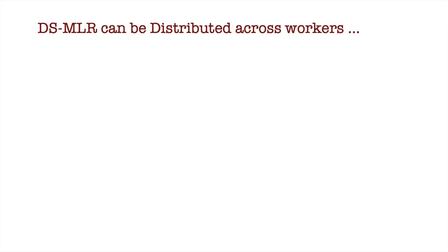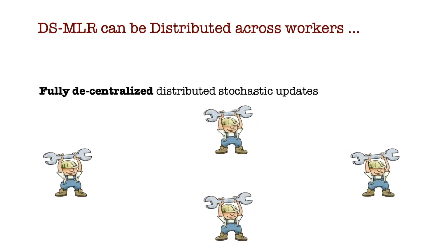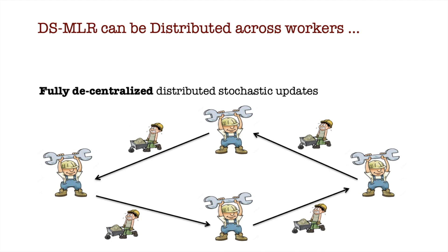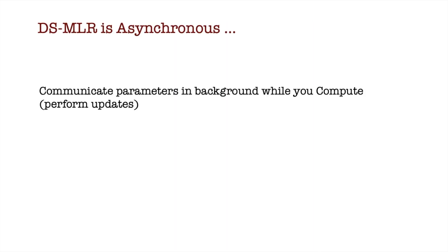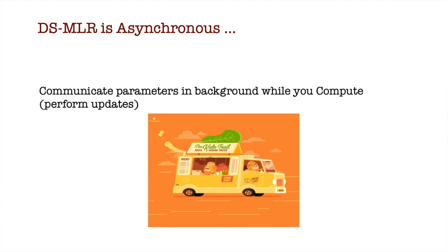DSMLR is a distributed method that follows a fully decentralized architecture. In other words, data and parameters are partitioned into mutually exclusive blocks across different workers. Each worker makes stochastic updates using the data and parameters available to it. Periodically, the workers communicate necessary parameters amongst each other. We also develop an asynchronous version of DSMLR, which can interleave communication and computation to improve the efficiency further.